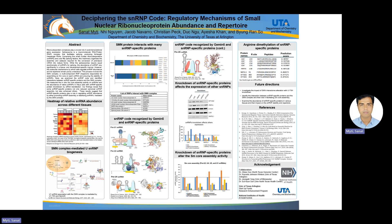As SNARF repertoire is a fundamental requirement for diversifying the expression of genes in different tissues and during development, if we understand the repertoire and abundance of SNARF, we will understand the basic mechanism of diversification of gene expression in different tissues and also understand the development process and its defects in broader aspects.